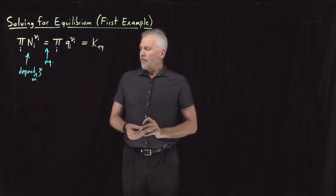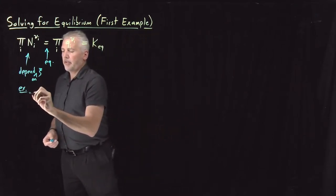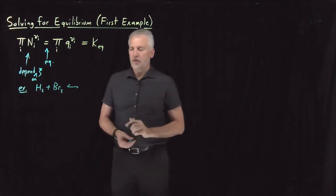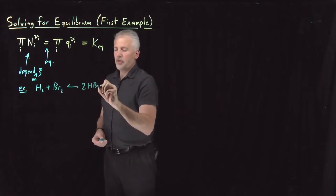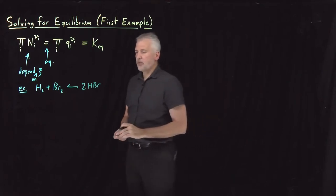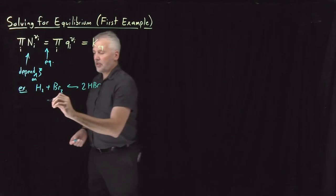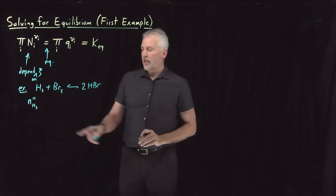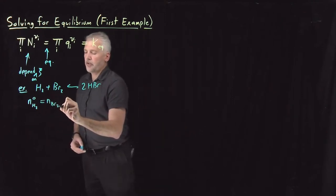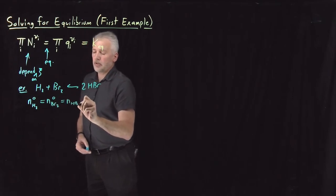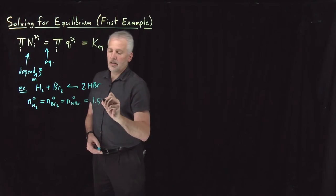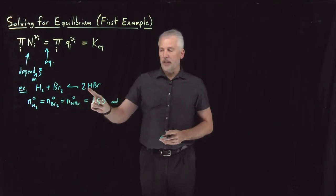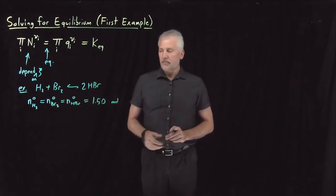Let's do an example so we can see in detail what I mean. Let's go back to our favorite reaction: the equilibrium reaction between hydrogen and bromine gas forming hydrogen bromide gas. As initial amounts, let's make the initial amount of H₂, Br₂, and HBr all equal to one another — a mole and a half of each. So I have a container with 1.5 moles of hydrogen gas, 1.5 moles of bromine gas, and 1.5 moles of HBr.